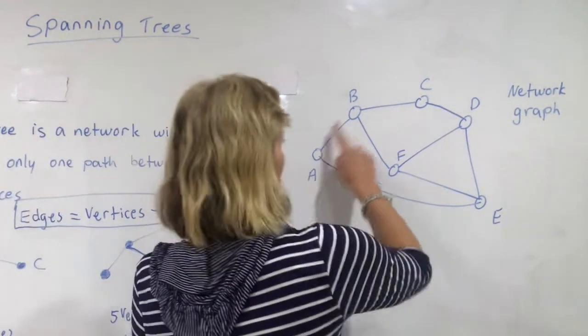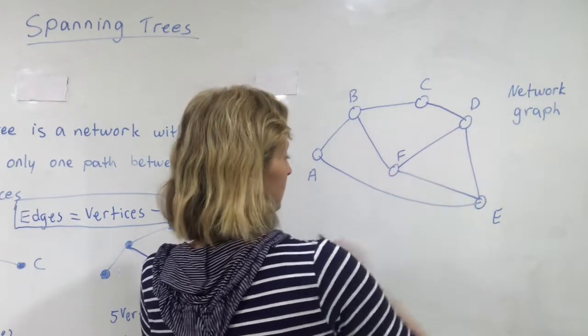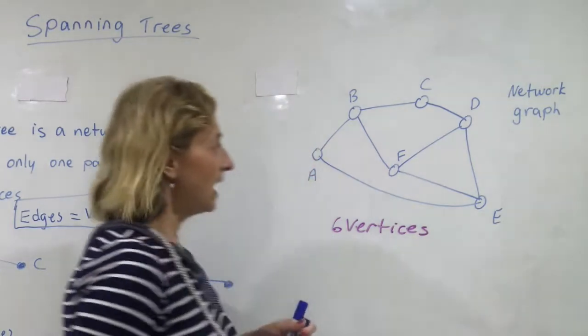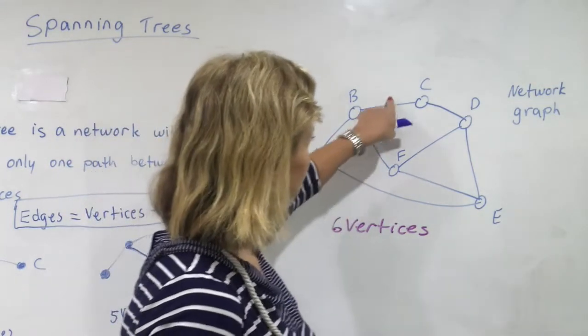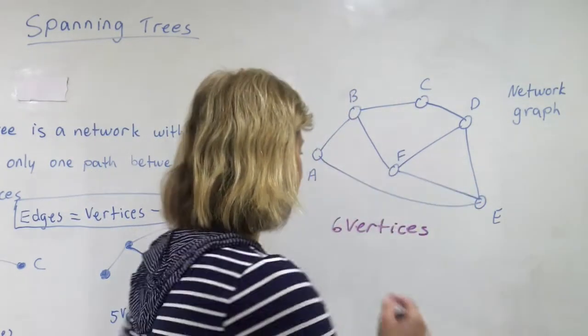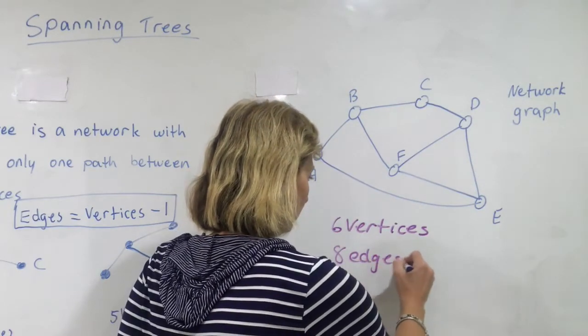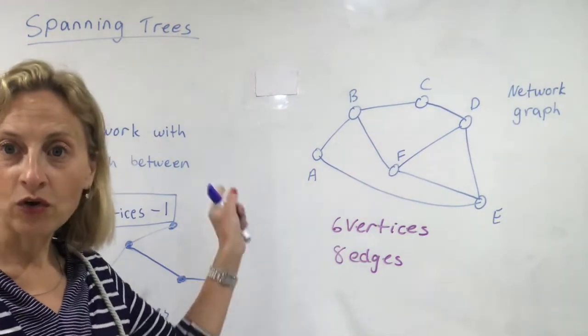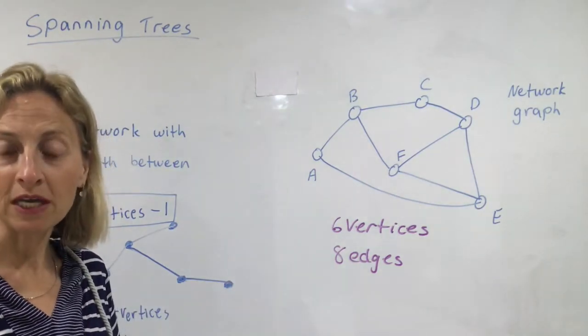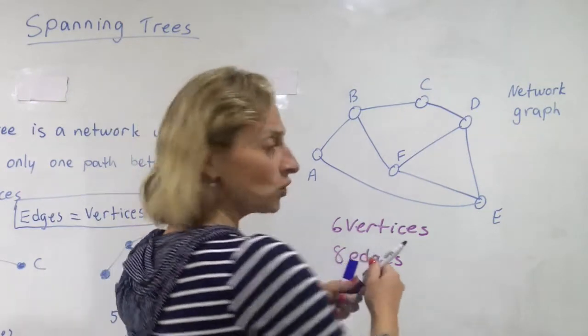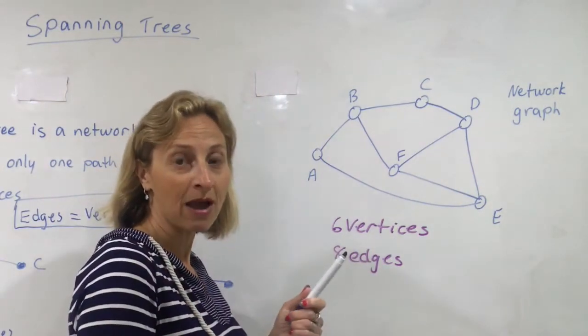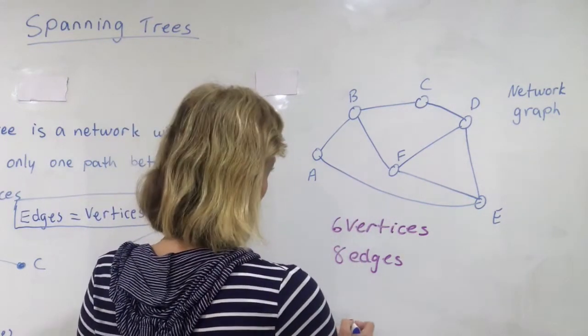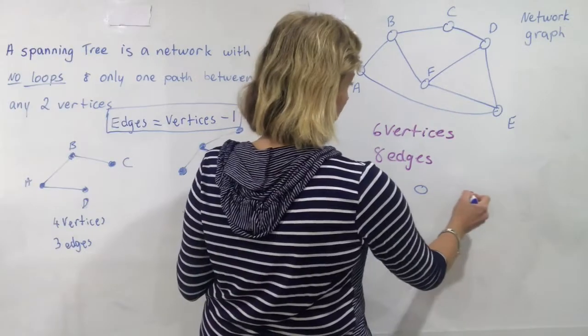We know that we have one, two, three, four, five, six, seven, eight edges. But if we want to make this network graph into a spanning tree, we need our spanning tree and I'll draw a completely separate diagram. I find it very confusing to use the same picture. I like to just redraw it the best that I can.